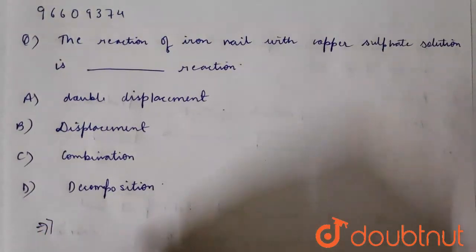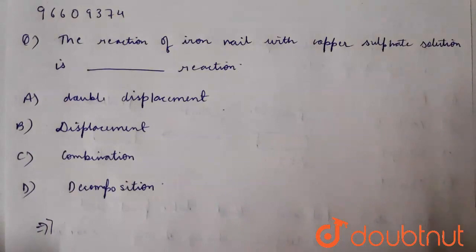So when an iron nail is dipped in the copper sulfate solution, there is brown coating of copper that is formed on the surface of the iron. This is observed.